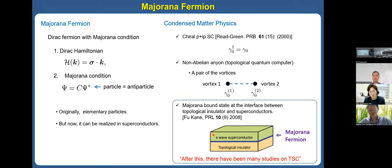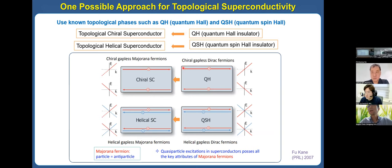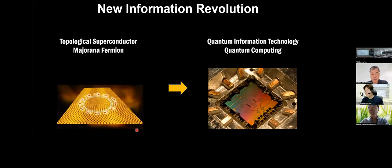After this, there have been many studies on topological superconductors using topological materials. One possible method for finding topological superconductors is to use known topological materials such as quantum Hall and quantum spin Hall insulators. For example, for the quantum Hall insulator, there are edge states at the boundary. If we assign superconductivity in this material, we can get a Majorana fermion at the boundary, making a chiral superconductor. Similarly, for the quantum spin Hall insulator, it can become a helical superconductor after superconducting pairing. We expect that Majorana fermions will lead to new revolutions such as quantum information and quantum computation.